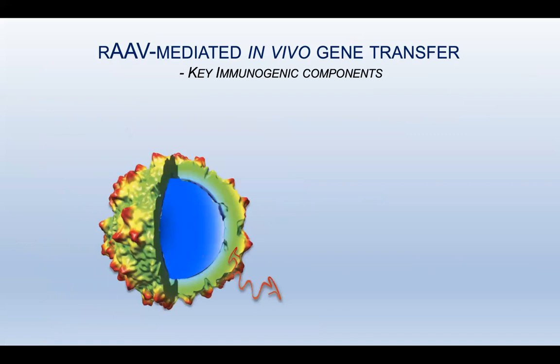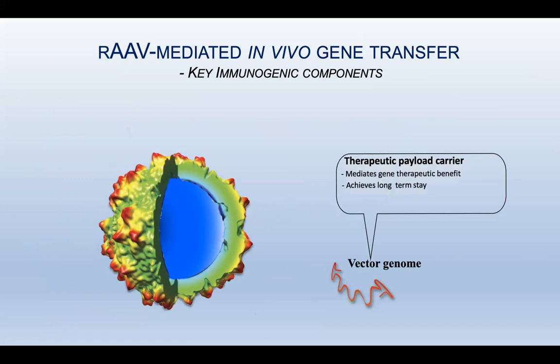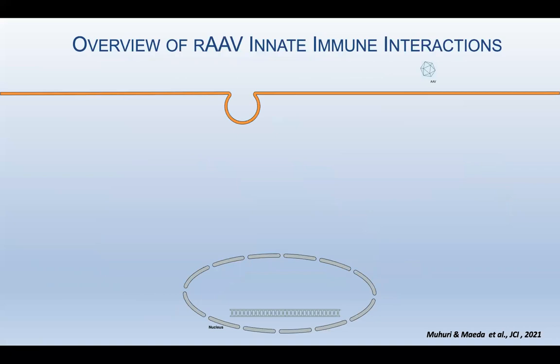The second component is the AAV vector genome, which is the therapeutic payload carrier. It mediates gene therapeutic benefits and achieves long-term expression. It also triggers innate pattern recognition receptor engagement and adaptive transgene immunity.